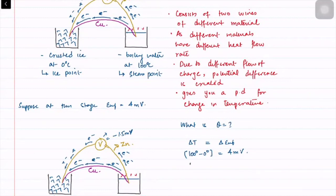Between zero degrees and theta, if the change was minus 1.5 millivolts, you cross multiply: 4 millivolts times theta equals 100 times minus 1.5 millivolts. So theta equals 100 times minus 1.5 divided by 4.